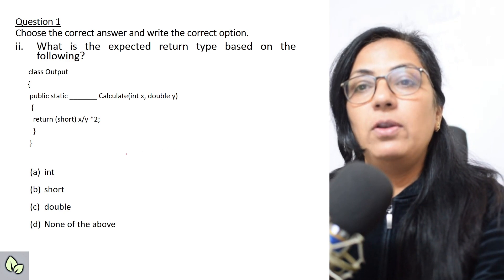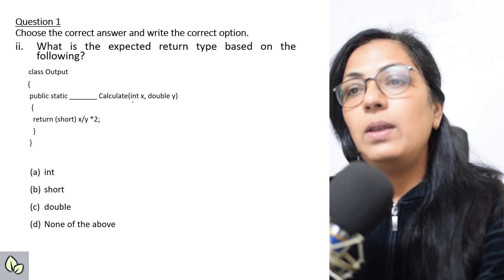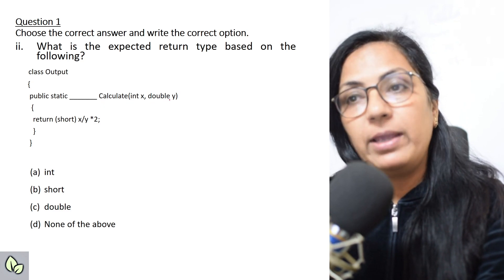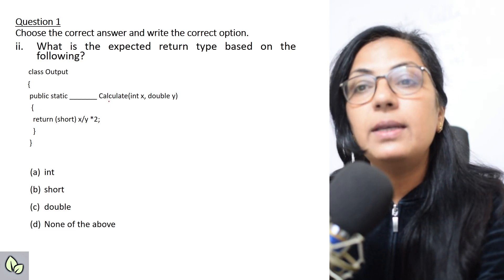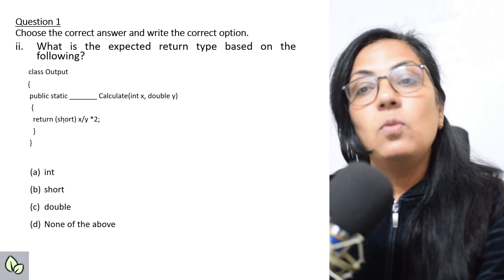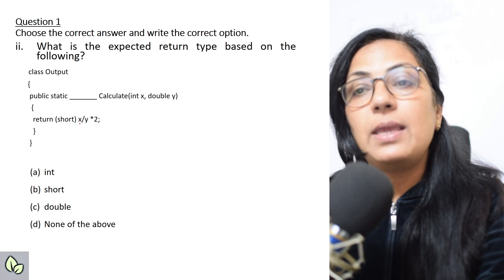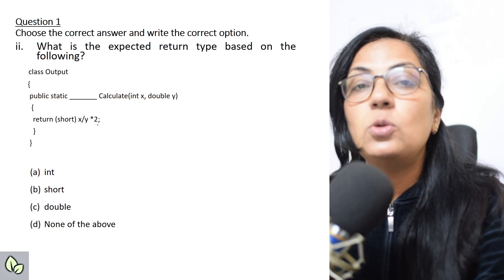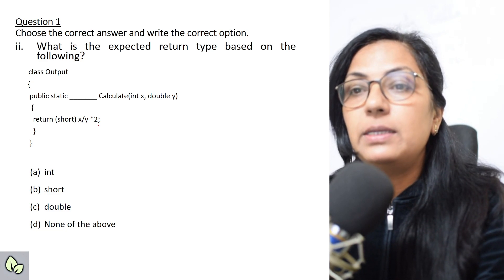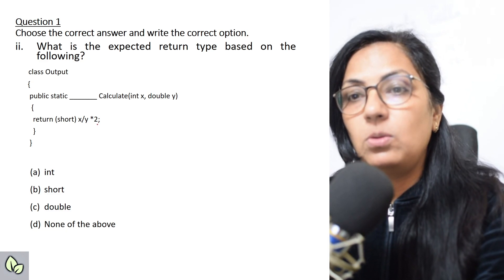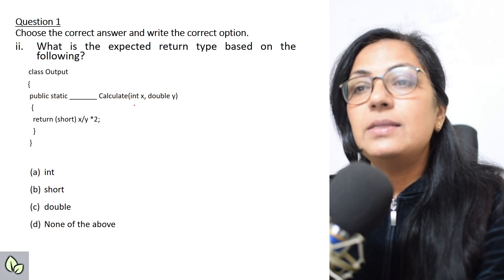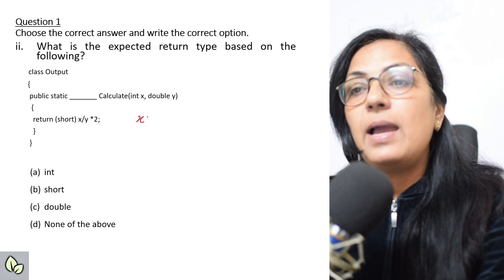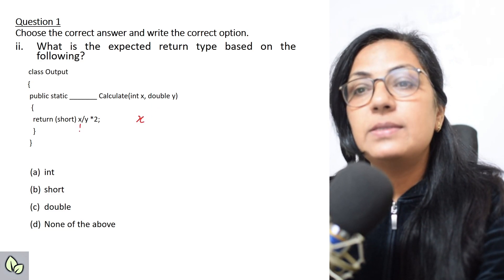Class Output, public static dash calculate int x comma double y. Now here function name is calculate. Before the function name, what you have to write? The return type. So return what it is returning? Short x slash y into 2. Now here x is int type and y is double type.